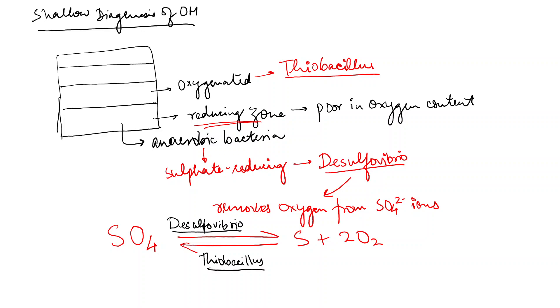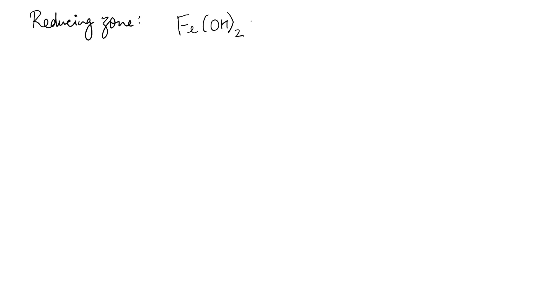In the reducing zone, the free sulfur may combine with iron in ferrous hydroxide to form pyrite. Additionally, sulfate ions may react with organic matter to produce hydrogen sulfide. Using the general formula CH₂O for organic matter, it may give rise to bicarbonate and hydrogen sulfide.